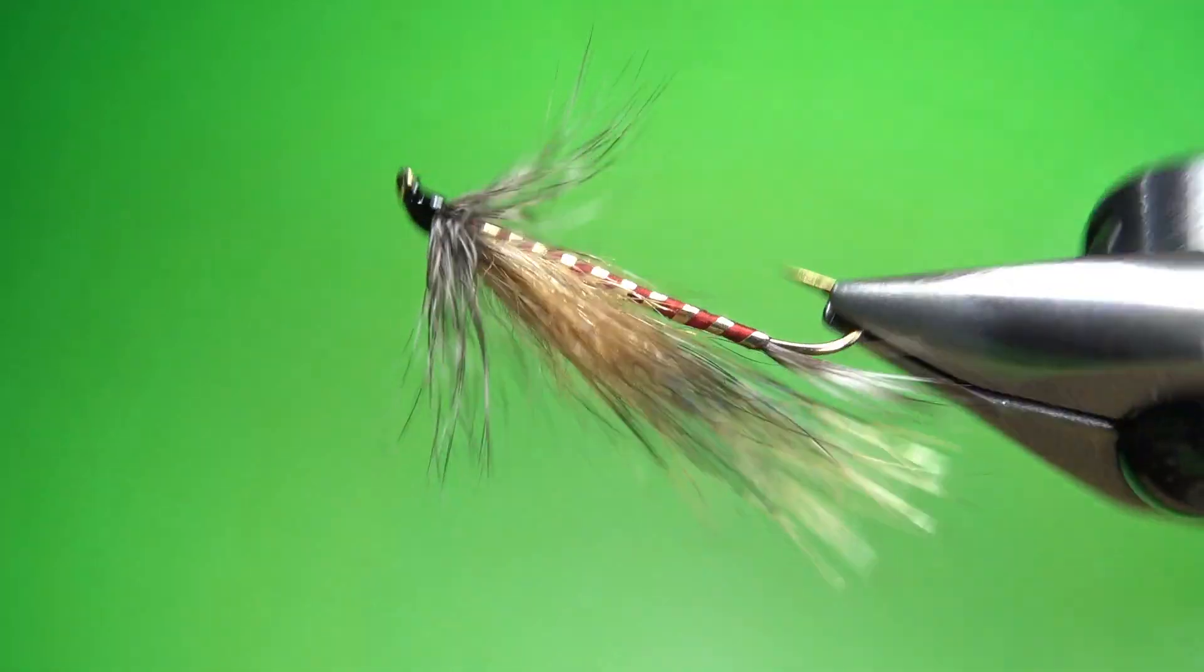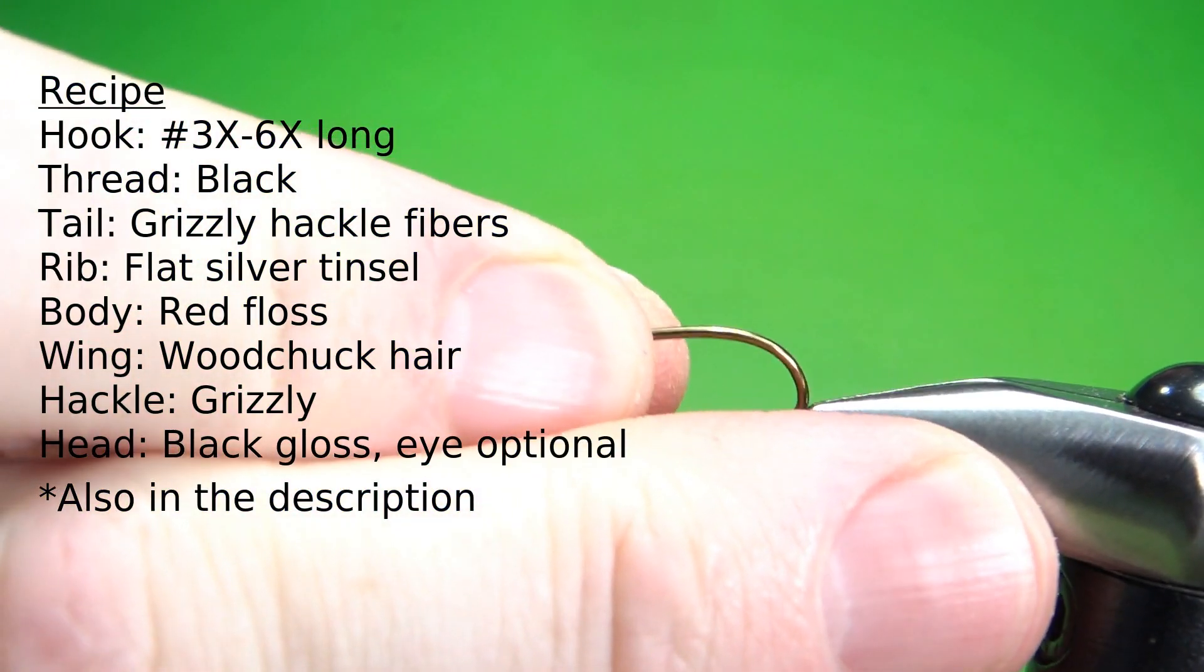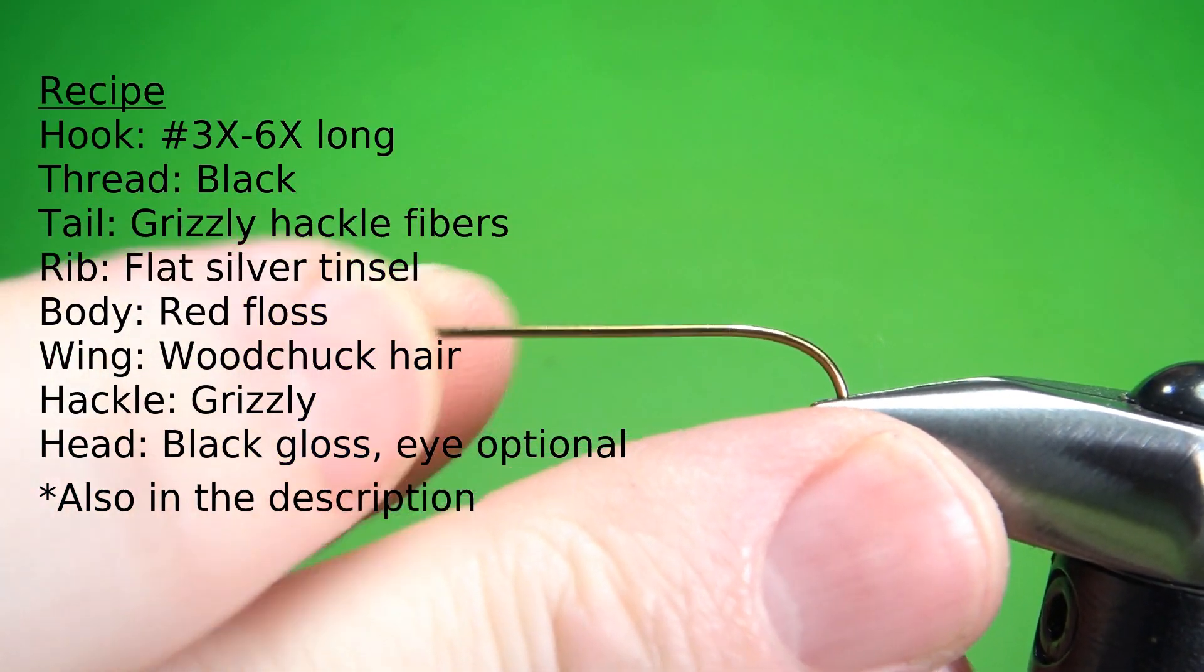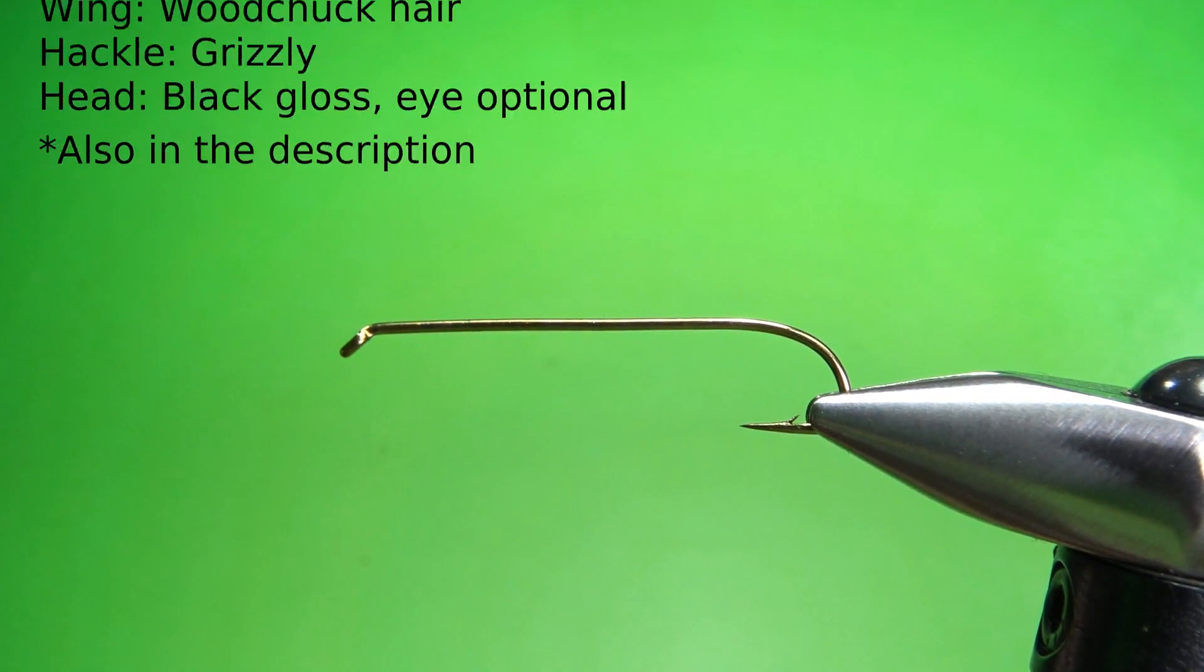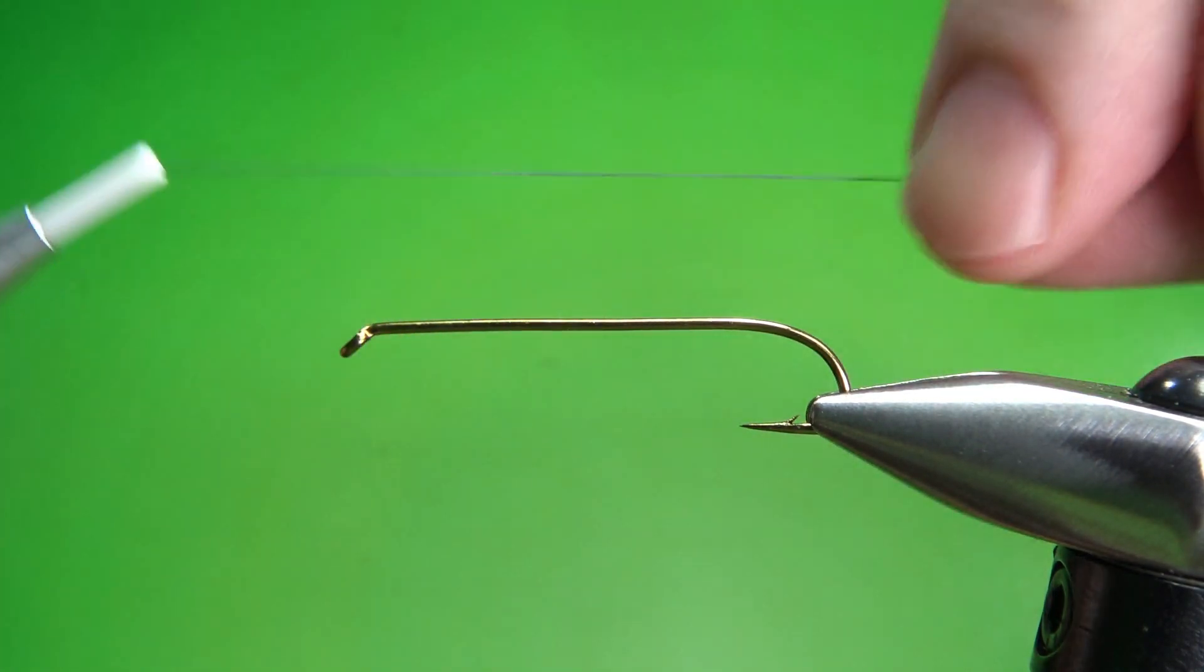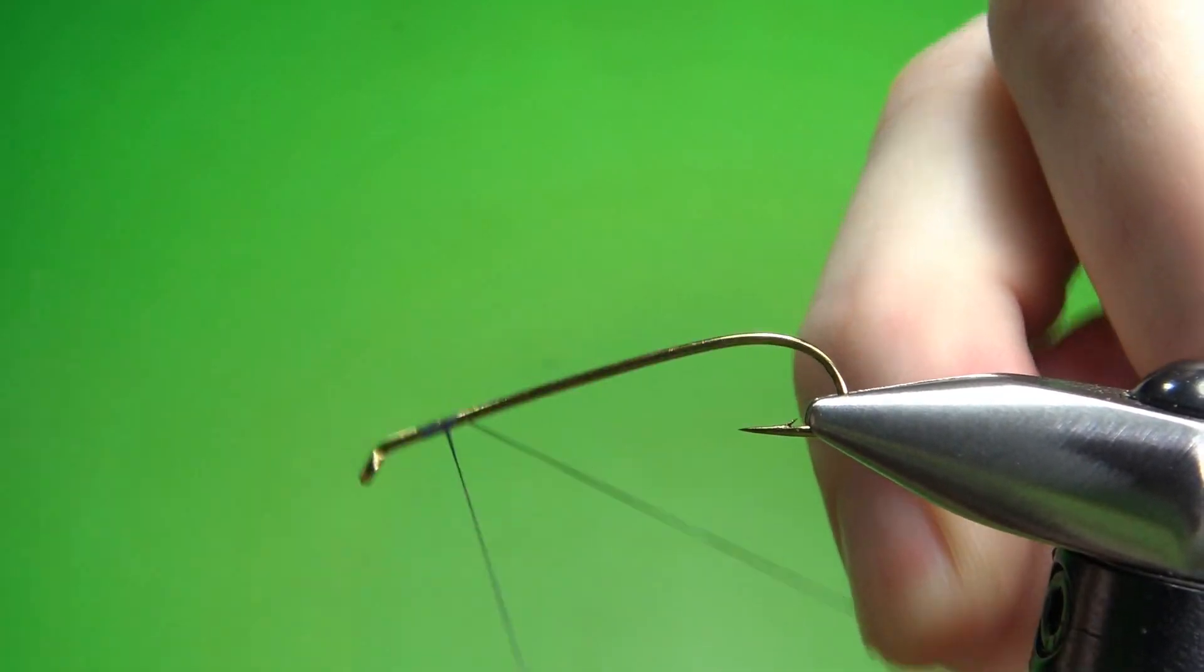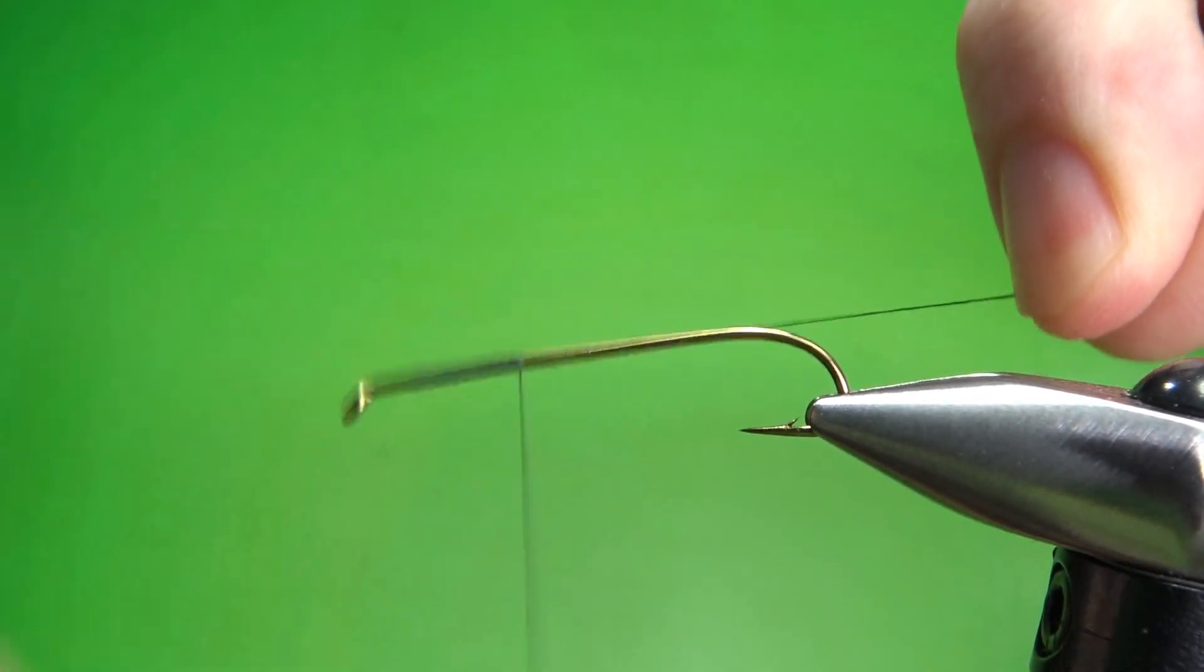So there you go, the Llama. Pretty cool-looking streamer. I'm going to be tying this on a size 8, and I am using a 6x long streamer hook. This is a pretty long beast we got right here. And I want to put down a base of 70 denier black. You could certainly step it up to a 140 or even a 210 probably, but this is what I had spooled, and it'll work just fine.